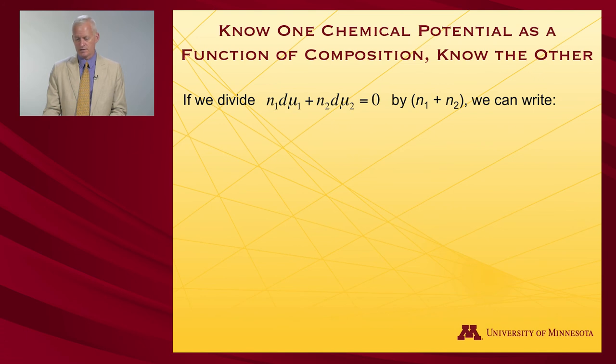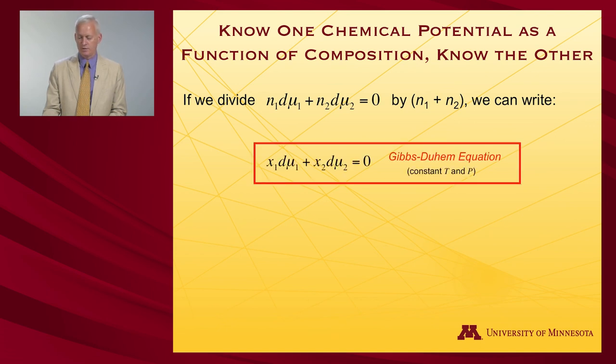So if we take that last expression, and let's just divide by the total number of moles in the system, in which case I'll get number of moles of one divided by total number of moles. That's the mole fraction of one. And similarly for two, I get mole fraction one dμ1 plus mole fraction two dμ2 is equal to zero. And that is the Gibbs-Duhem equation. And it applies at constant temperature and pressure.